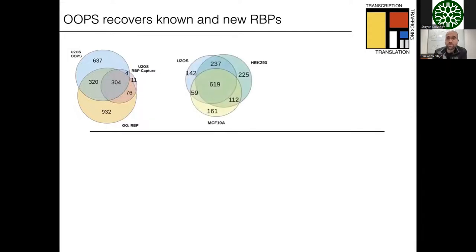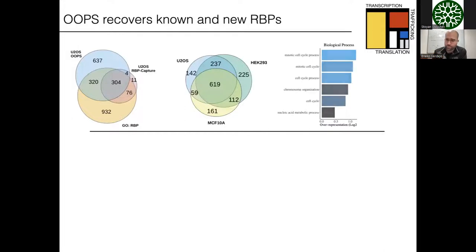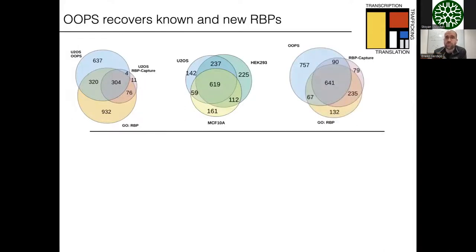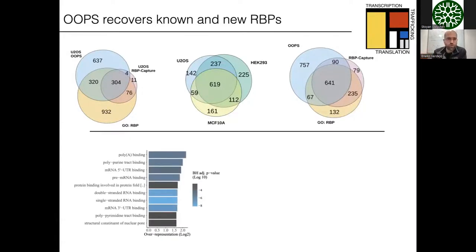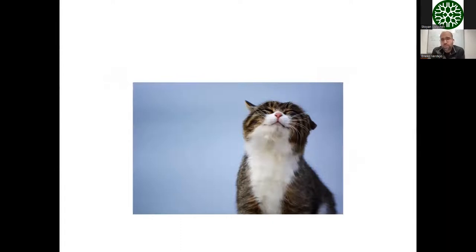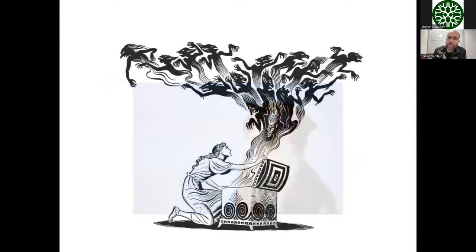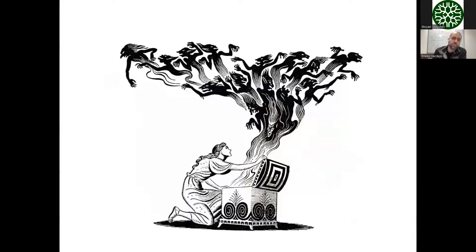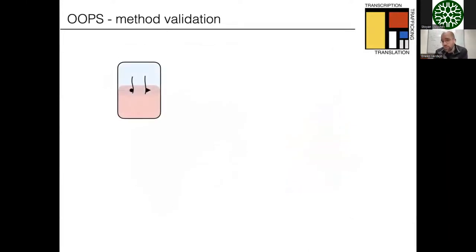We applied this to tumoral and non-tumoral models and recovered the great majority of known RNA-binding proteins, along with many new ones. The yield terms were mostly related to RNA-binding proteins regardless of prior annotation. At this point, while we were recovering many novel putative RNA-binding proteins, I didn't want to invest time validating them one by one, so we thought there had to be a way to validate them at a high-throughput level.